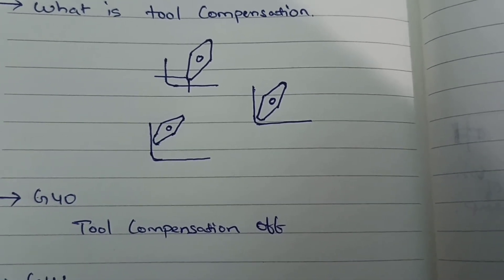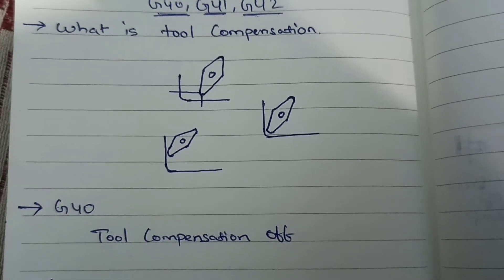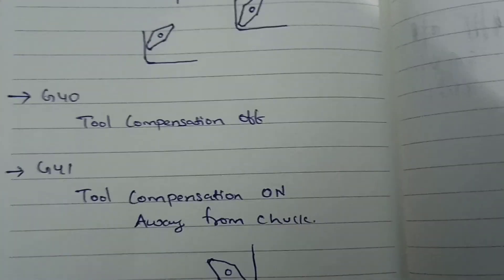So what is G40 code? G40 code will be used to cancel the tool compensation. What is G41 code?